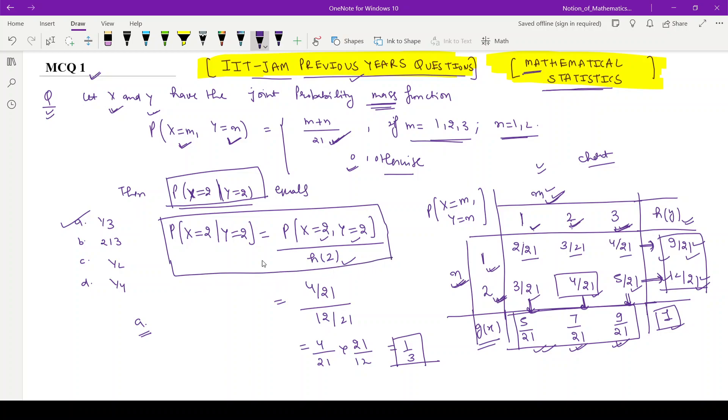The formula is P(X=2 | Y=2) = P(X=2, Y=2) divided by the marginal distribution of Y at 2, which is h2. P(X=2, Y=2) is 4/21.